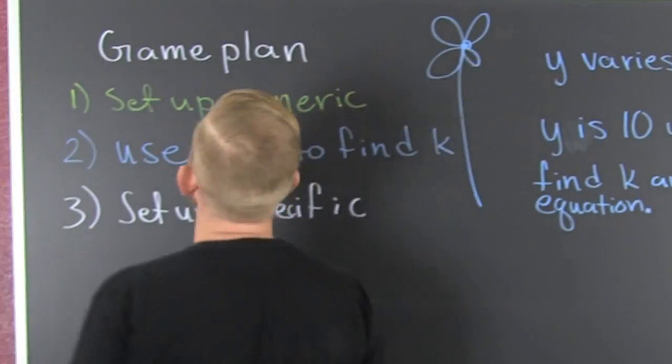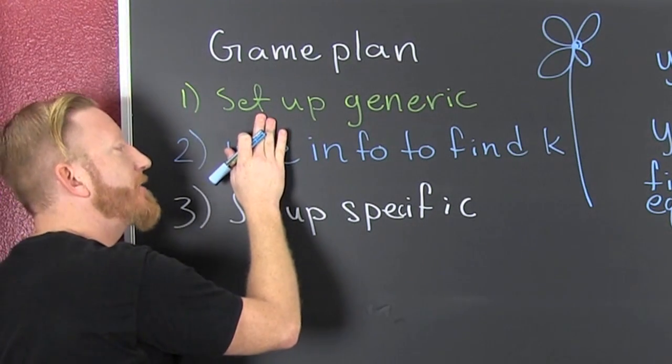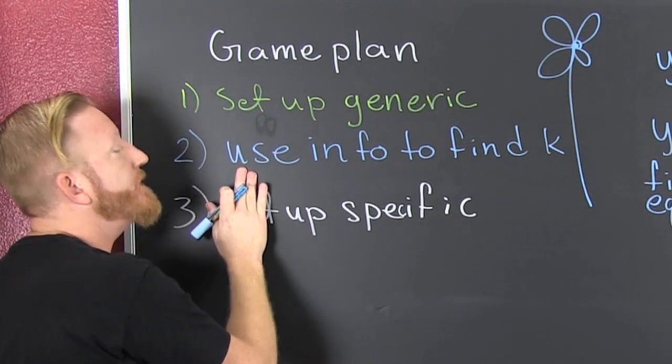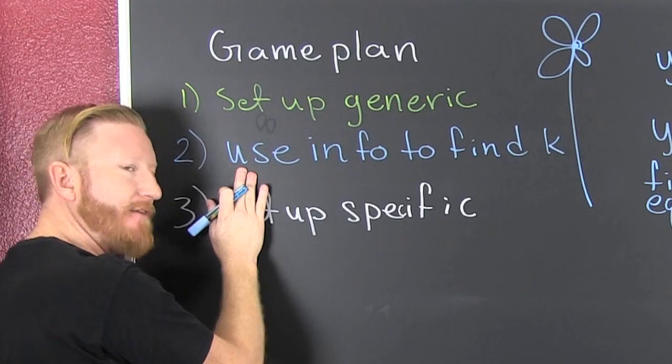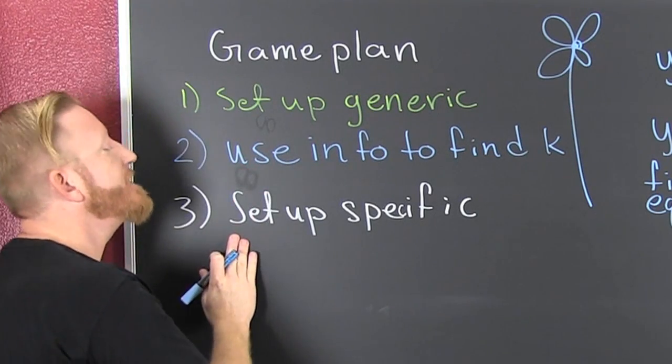So the game plan: We set up a generic equation. Then we use the info to find k. After we get that k, we get a specific.